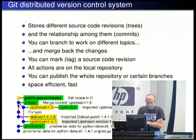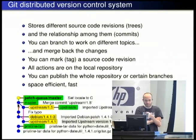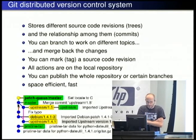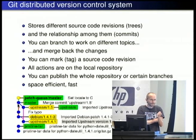Overall, Git is disk-space efficient and fast. Keith Packard did some studies when he moved xorg into Git from CVS and it turns out the checkout isn't much larger than the Git repository itself.